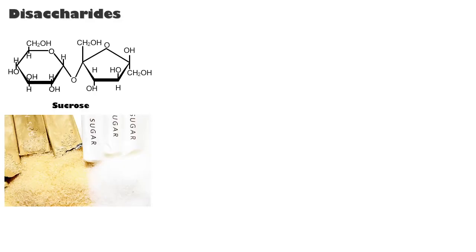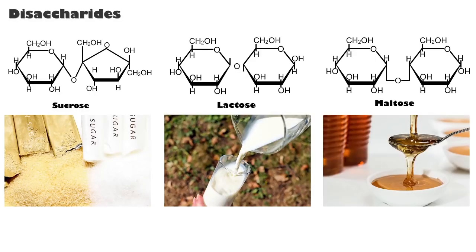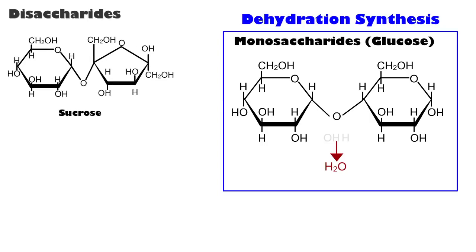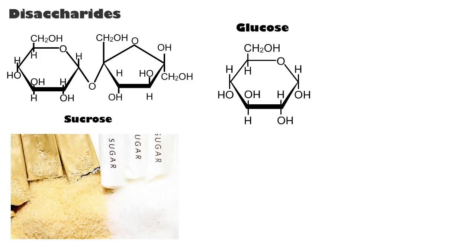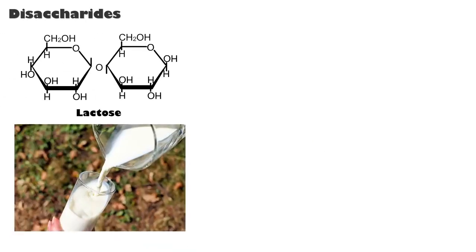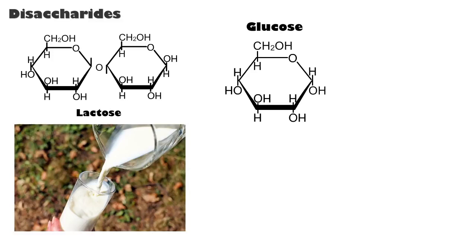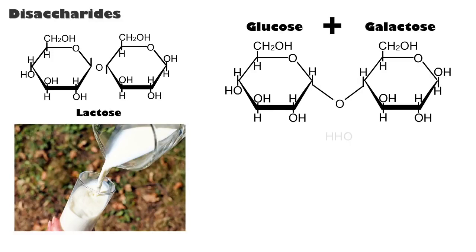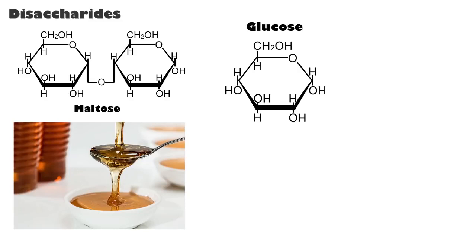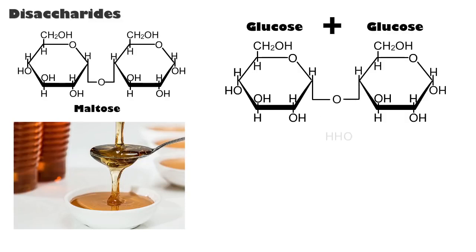Disaccharides include sucrose, lactose, and maltose. Two monosaccharides joined together by dehydration synthesis form a disaccharide molecule. Sucrose, or table sugar: glucose plus fructose equals sucrose plus water. Lactose, or milk sugar: glucose plus galactose equals lactose plus water. Maltose, or malt sugar: glucose plus glucose equals maltose plus water.